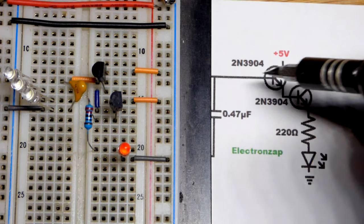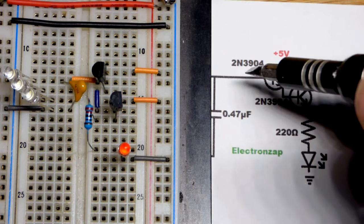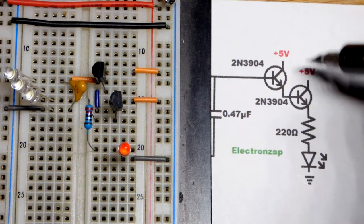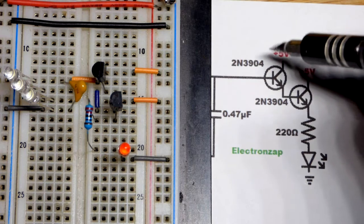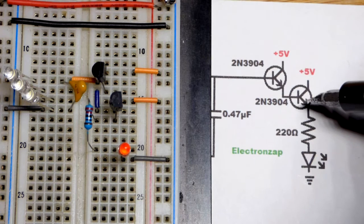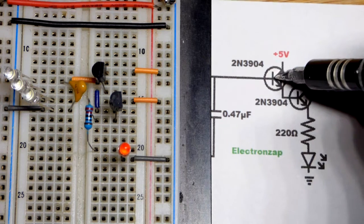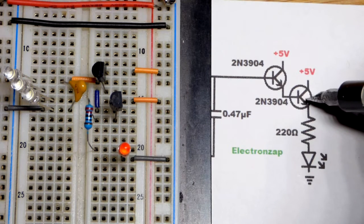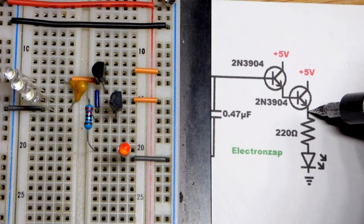So we got a second transistor to have more current going from base to emitter there, allowing even more current. The gain actually multiplies - if each one of these has a gain of 200, it'll be 200 times 200, so like 40,000 gain right there.